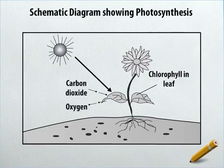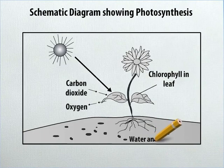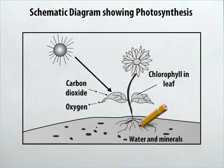On the lower right-hand side of the sheet, below the roots of the plant, write water and minerals. Draw two arrows pointing towards the roots like this.